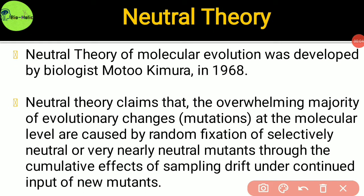The neutral theory: the molecular clock hypothesis received theoretical backing when biologist Moto Kimura developed the neutral theory of molecular evolution in 1968. Neutral theory claims that the overwhelming majority of evolutionary changes at the molecular level are caused by random fixation of selectively neutral or very nearly neutral mutants through the cumulative effects of sampling under continued input of new mutants. Mutation occurs at a very slow rate, so it takes millions of years to produce a considerable change in organisms from their ancestral lineage.